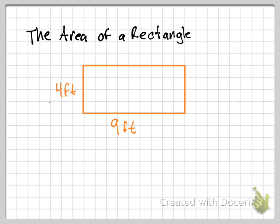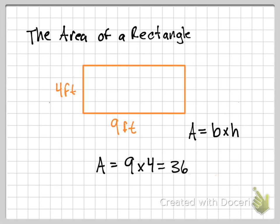Let's take a look at this problem — we're asked to find the area of this rectangle. Remembering our formula, A equals base times height, so I write A equals 9 times 4, which equals 36. Notice we're multiplying 4 feet times 9 feet, so feet times feet becomes feet squared — an important unit when referring to area.